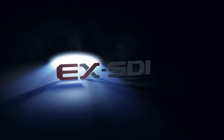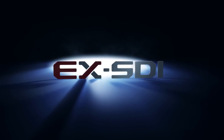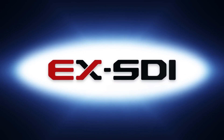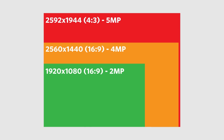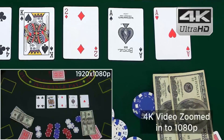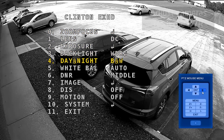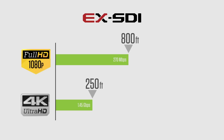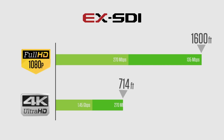So what does the future hold for eXSDI? Well, it's capable of much more than what we've discussed so far. Features like 4 and 5 megapixel resolution, 4K video at 30 frames per second, universal coax communication, time division multiplexing, and even longer transmission distances than before are all coming soon.